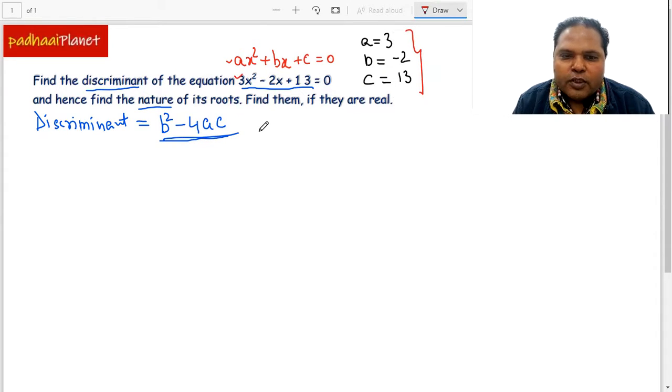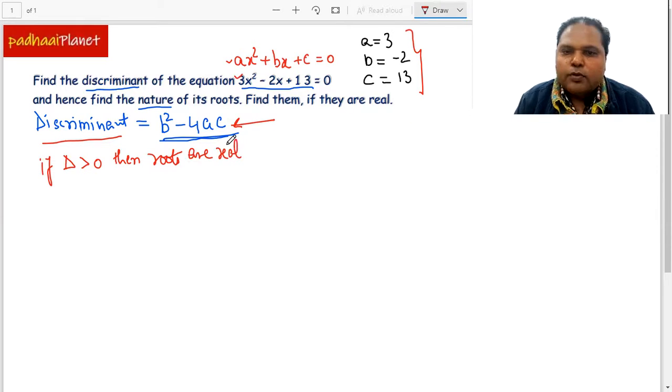We need to simply put them into this formula and we will get the value of the discriminant. We know that if D comes more than 0, then the roots are real and then we can find them also.